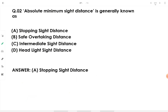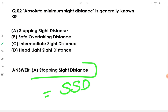Absolute minimum sight distance is generally known as stopping sight distance. So absolute minimum sight distance is equal to SSD, which is stopping sight distance.